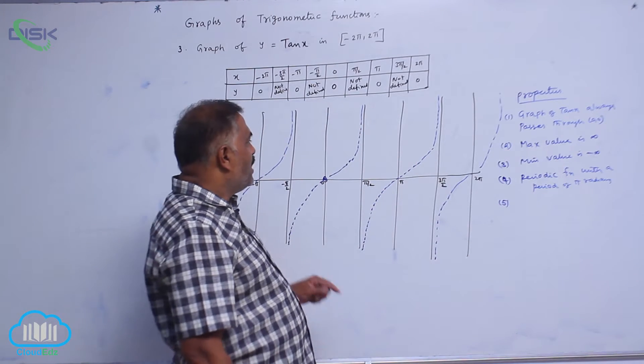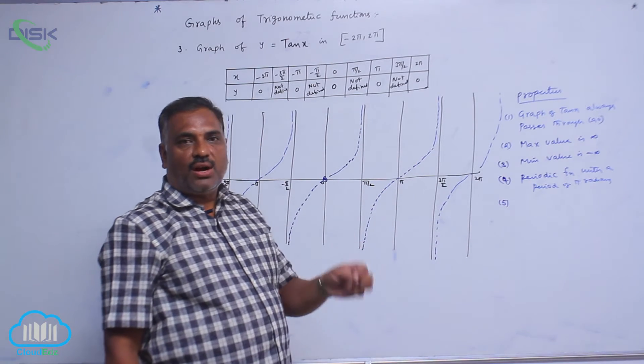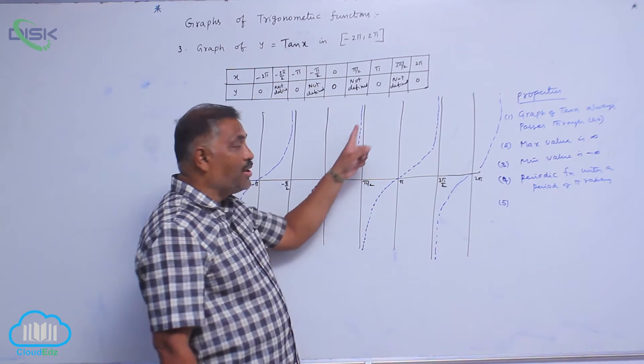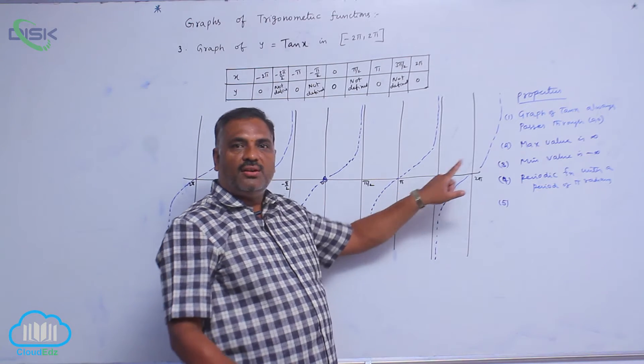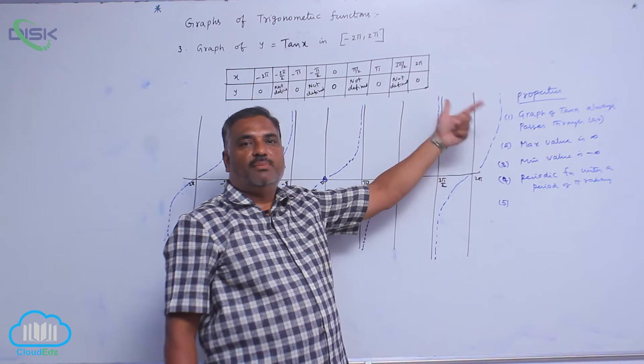most important property. Like sin curve and cos curve, which are continuous, this is not continuous. This is not a continuous curve. There is a break at π by 2, 3π by 2, next will be 5π by 2, 7π by 2, and so on.